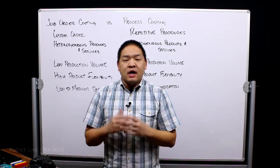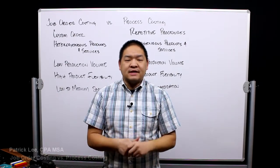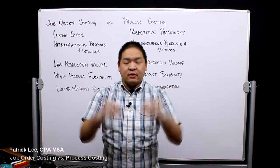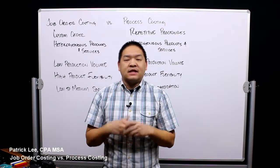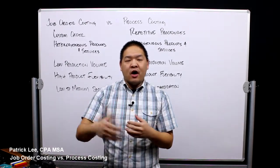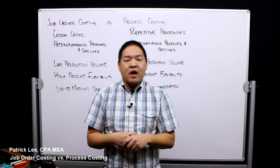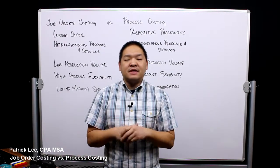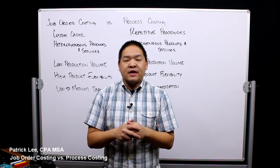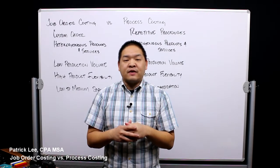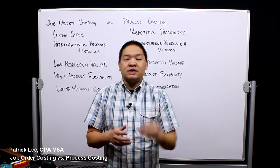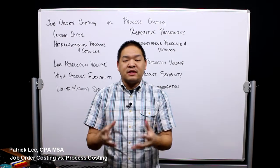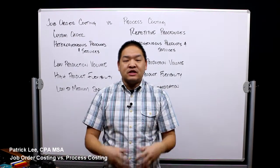In this lesson we're going to go over job order costing and process costing as they relate to managerial accounting. We really have two types of costing, and by costing we mean costing in a manufacturing process — how we accumulate all the expenses associated with a product. This is different from retail where we simply buy products from a vendor and know the price paid. In manufacturing it's not that easy, especially when we're dealing with raw materials and converting them into finished goods.